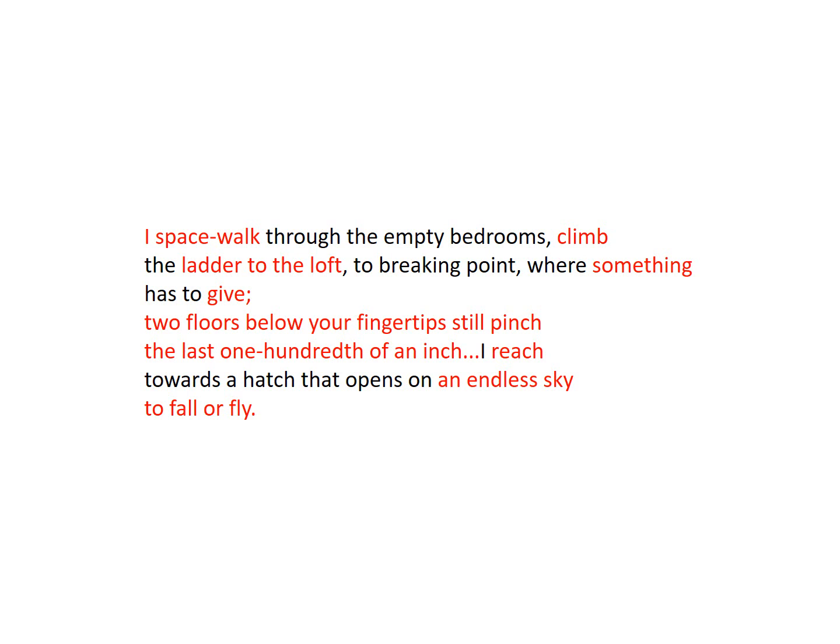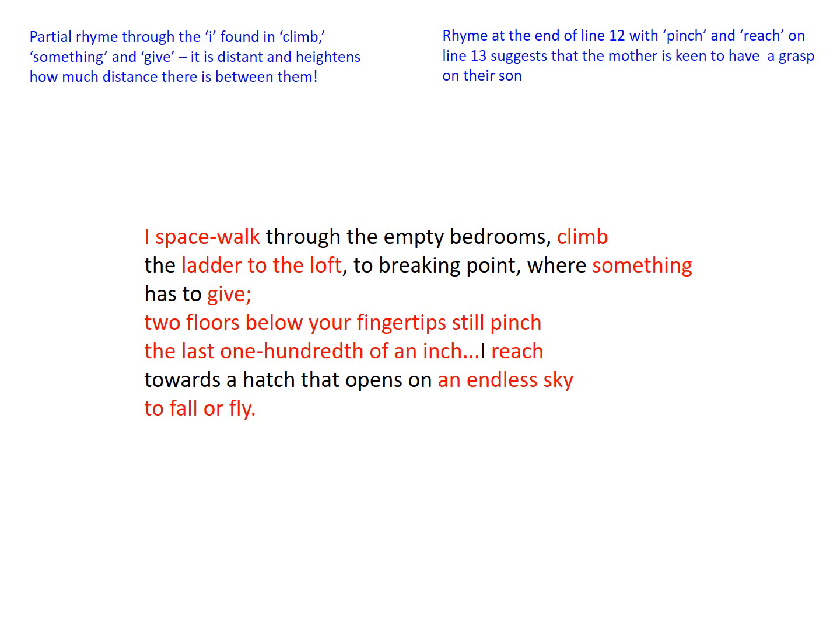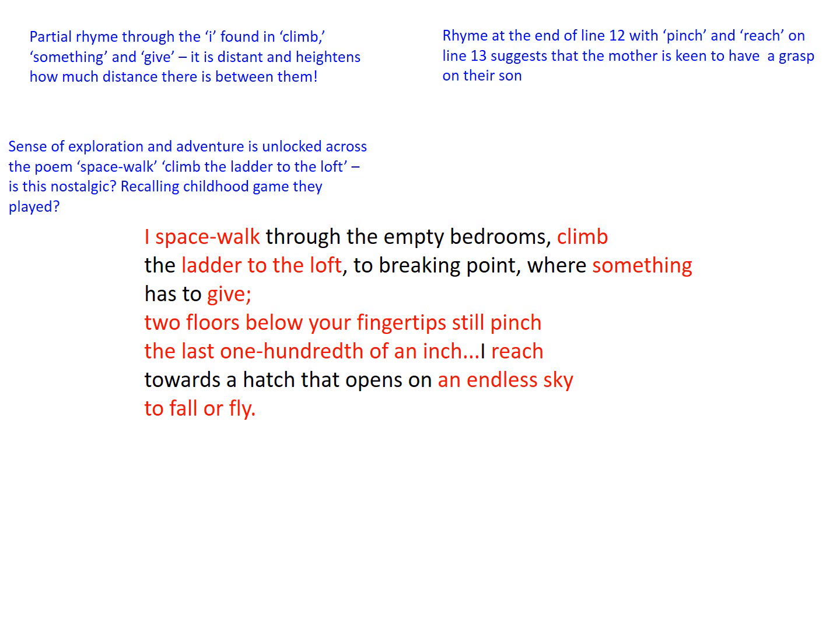In the third stanza there's partial rhyme at the ends of lines eight, nine and ten — the 'I' sound found in 'climb,' 'something,' and 'give.' It's not a full rhyme; it's distant, heightening how much distance there is between mother and son. We also grapple with the sense of exploration and adventure unlocked across the poem — the speaker spacewalks, climbs the ladder to the loft. Is this nostalgic? Is it a recollection of a childhood game, or is it unlocking the child's desire for independence without their parent around?